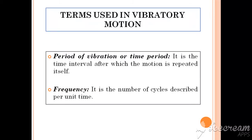Now, the various basic terms used in vibratory motion. The first is period of vibration — a complete cycle taken by a vibratory or oscillatory motion is termed as the period of vibration. The second term is frequency — the number of cycles described per unit time of vibratory motion is defined as frequency.